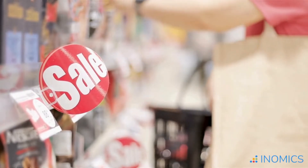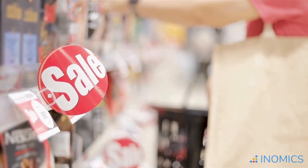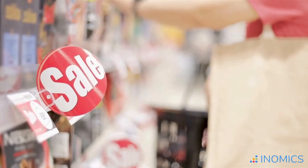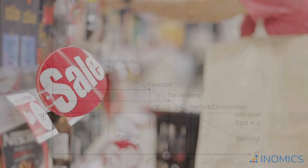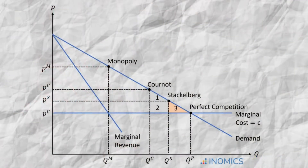So rather than do this, each firm anticipates the others will do the best they can to react to their decisions. This ends up leading the firms to collectively produce a quantity higher than the monopoly quantity, but lower than in a perfectly competitive equilibrium. The prices will also be higher than in perfect competition, but lower than they would be in a monopoly.